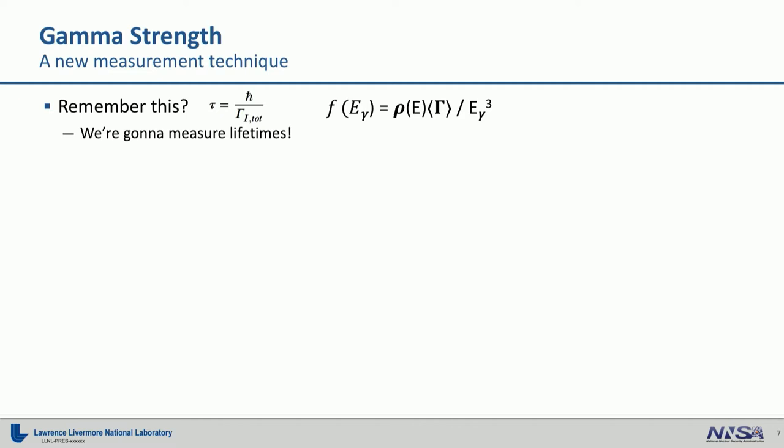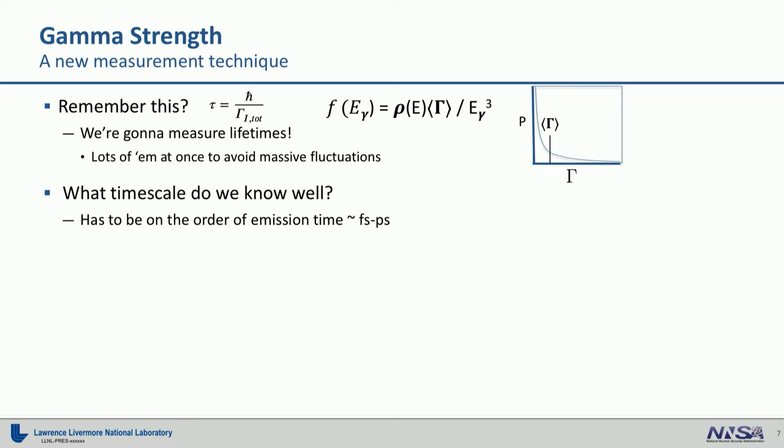I came up with a new method to determine gamma ray strength. So, I used the technique of lifetimes. So, as we talked about earlier, gamma strength is related to width, and width is inversely proportional to a lifetime. Now, we're going to need a lot of lifetimes because there's very strong fluctuations. So, that's why I'm going to go into the quasi-continuum where there's a lot of transitions available. We need to compare these transitions on a timescale of something we know very well. It has to be on the order of the emission time.